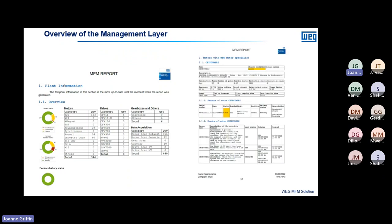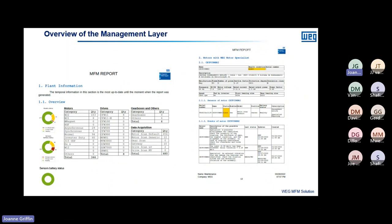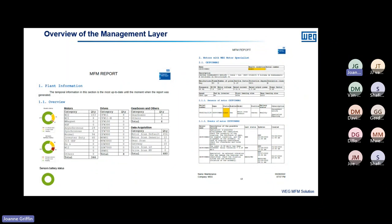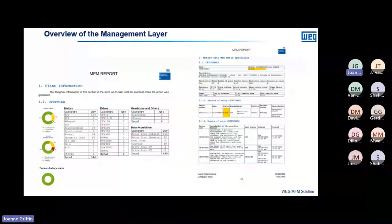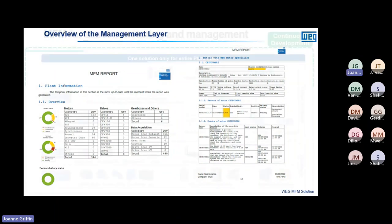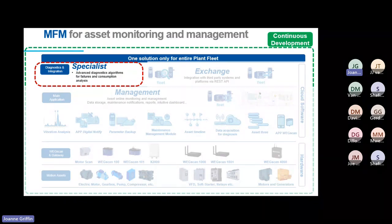This is a typical fleet report you can generate from the MFM platform. It gives a summary of all the assets you have — on the left-hand side it shows the number of motors, number of drives, and number of gearboxes in your plant. The report also indicates which assets the Specialist Module is running on and further details about those assets.